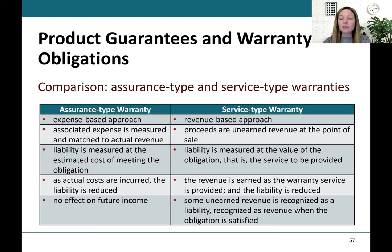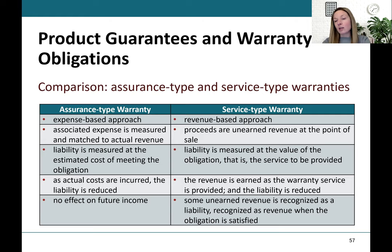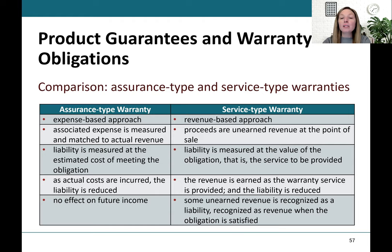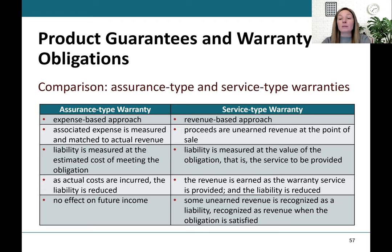The next type is a service type warranty. This is where, for example, at the cash register they ask if you'd like to purchase a one-year product defect warranty for $10. That $10 the store receives for the warranty needs to be recorded as unearned revenue, and the liability is measured at the value of the service. As the revenue is earned over the warranty service period — say a two-year $10 warranty — they would recognize $5 each year, and also recognize whatever expenses were incurred in each year to make good on that warranty.